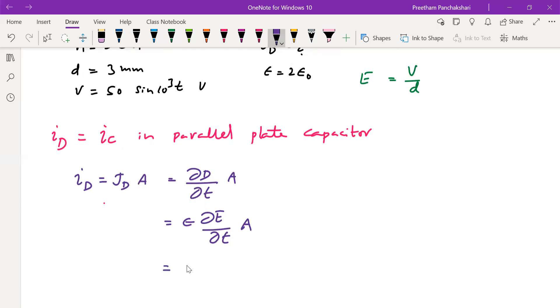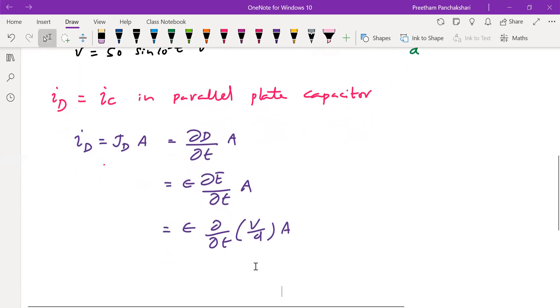But electric field can be calculated from potential or EMF using the relation V by D. So here epsilon d/dt of V by D times A. V is given in the numerical problem itself.